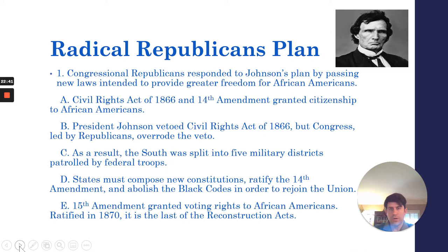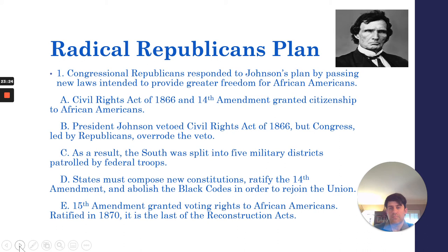President Johnson vetoed the Civil Rights Act of 1866; however, Congress, led by these Radical Republicans, overrode the veto. The end result was that the South was split into five military districts, patrolled by federal troops to enforce federal policy. In addition to this military presence, the Radical Republicans' plan required all Southern states to compose new state constitutions, officially ratify the 14th Amendment, and abolish the Black Codes in order to rejoin the Union.